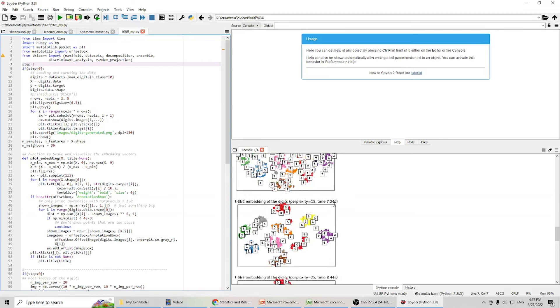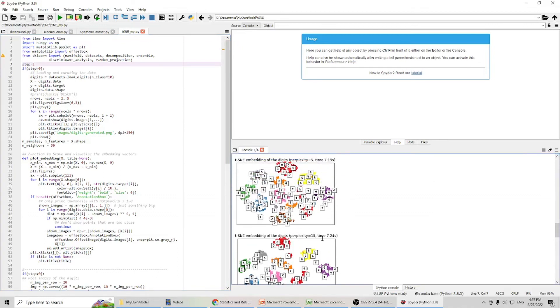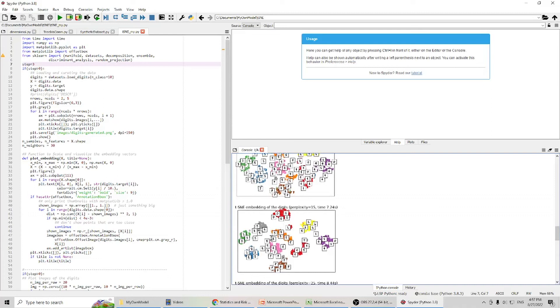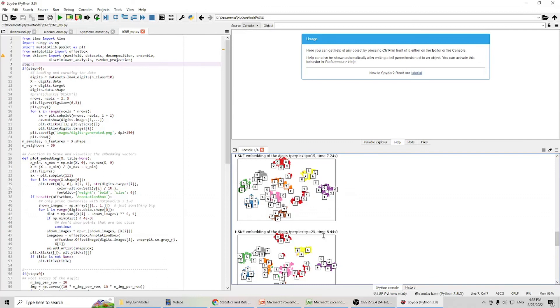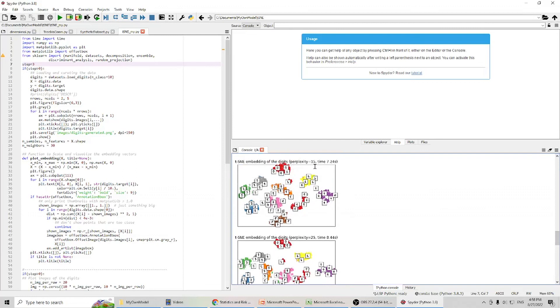And, if I use perplexity 15, it took 7.24 seconds. So, you can see, it will take longer time. But, we will get better results. You can see, all those clusters, they are separated. And, if I use perplexity 25, it will take even longer, 8.44 seconds. And, the result is kind of similar with when we use perplexity equal to 15.